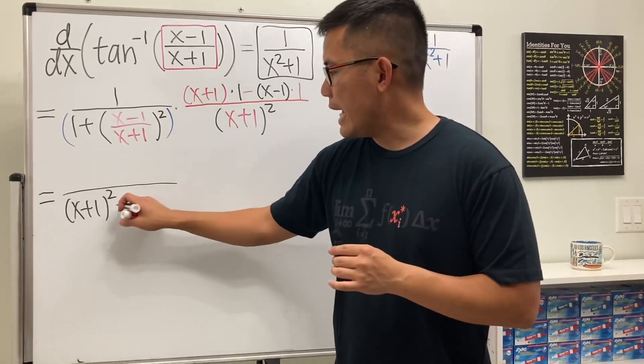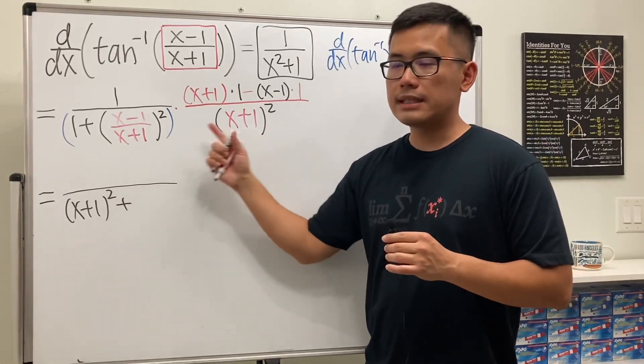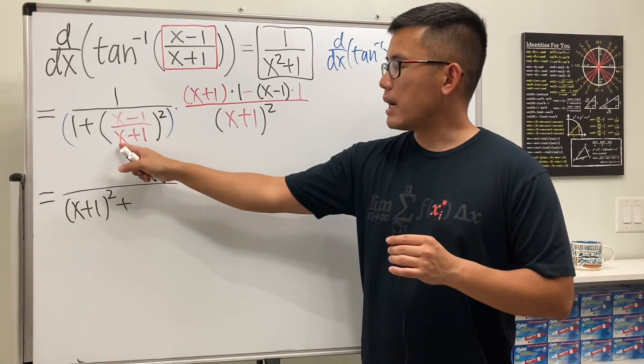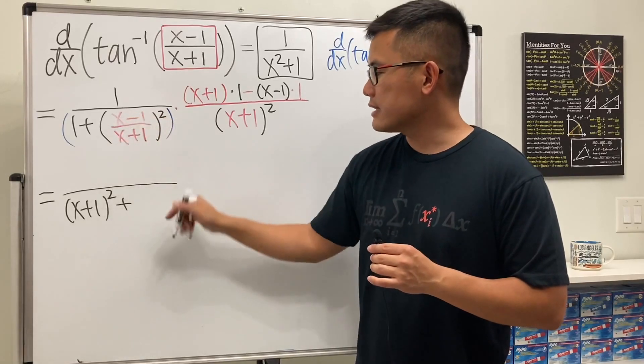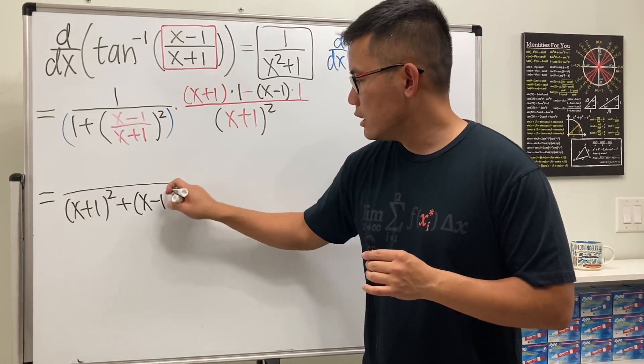And then we are going to add, when we take this times that, well, the bottom is technically x plus 1, square, so they cancel. Therefore, we just have x minus 1, square.